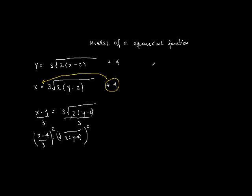And then continuing over here at the top right, I get x minus 4 over 3 all squared equals, and now I have 2y minus 2.